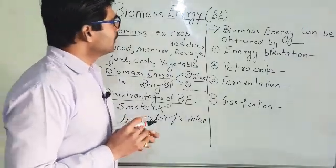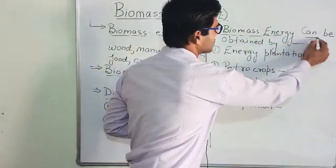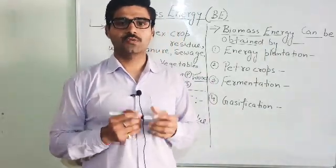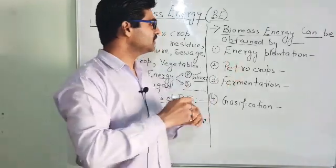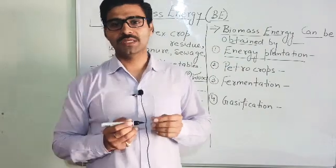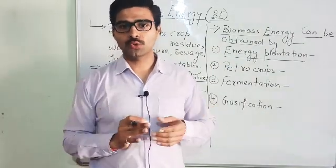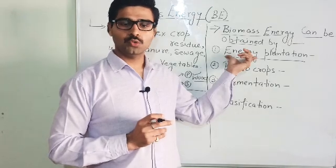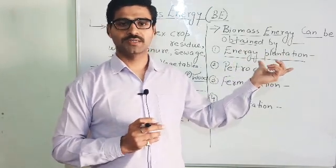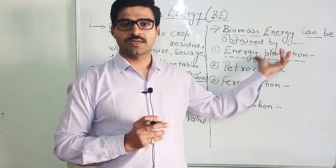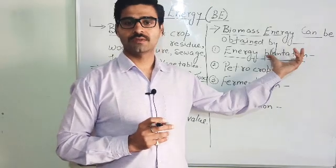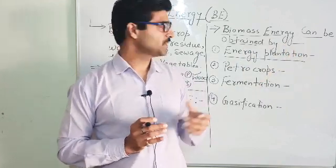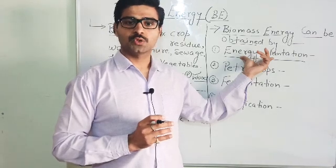Biomass energy can be obtained in different ways. The first option is energy plantation — a simple concept where we grow more and more fast-growing trees and crops that store CO₂ in the form of carbohydrates through the process of photosynthesis. We can use this plantation crop for the generation of energy. Examples include cotton wood and sugar cane.